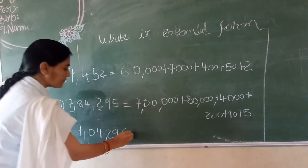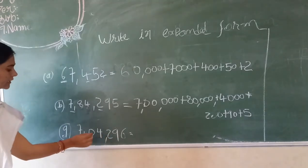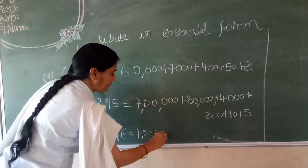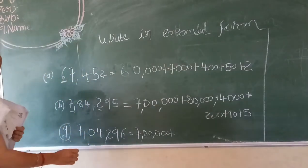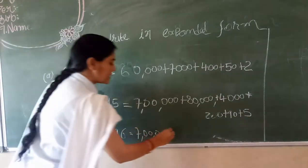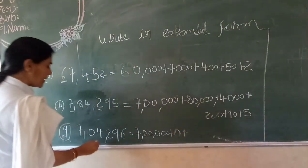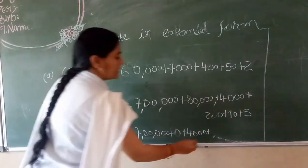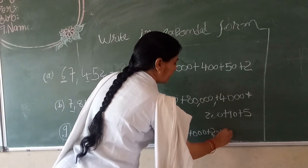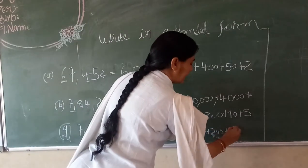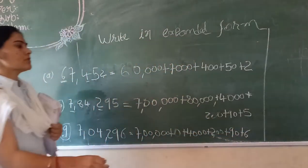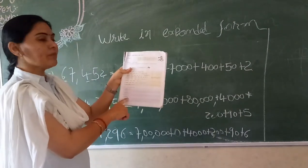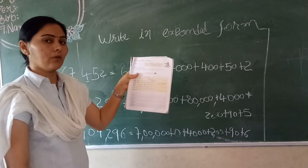Next one: one place, ten, hundred, thousand, ten thousand, and lakh. Place value of 0 is 0 — any digit in a place, if it is 0, the place value is 0. 4 is on thousand place so 4,000. 2 is on hundred place so 200. 9 is on ten place so 90. 6 is on one place so 6. The remaining exercise you do yourself at home.